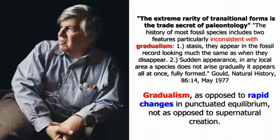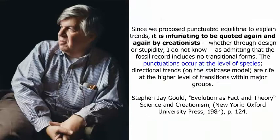The oft-cited quote from the late great Stephen Jay Gould about the trade secret of paleontology being the scarcity of transitional fossils seems to suggest that the number of transitional fossils is a weak point of evolution, when in fact Gould was referring to his own theory of punctuated equilibrium, in which isolated populations change morphologies relatively rapidly.